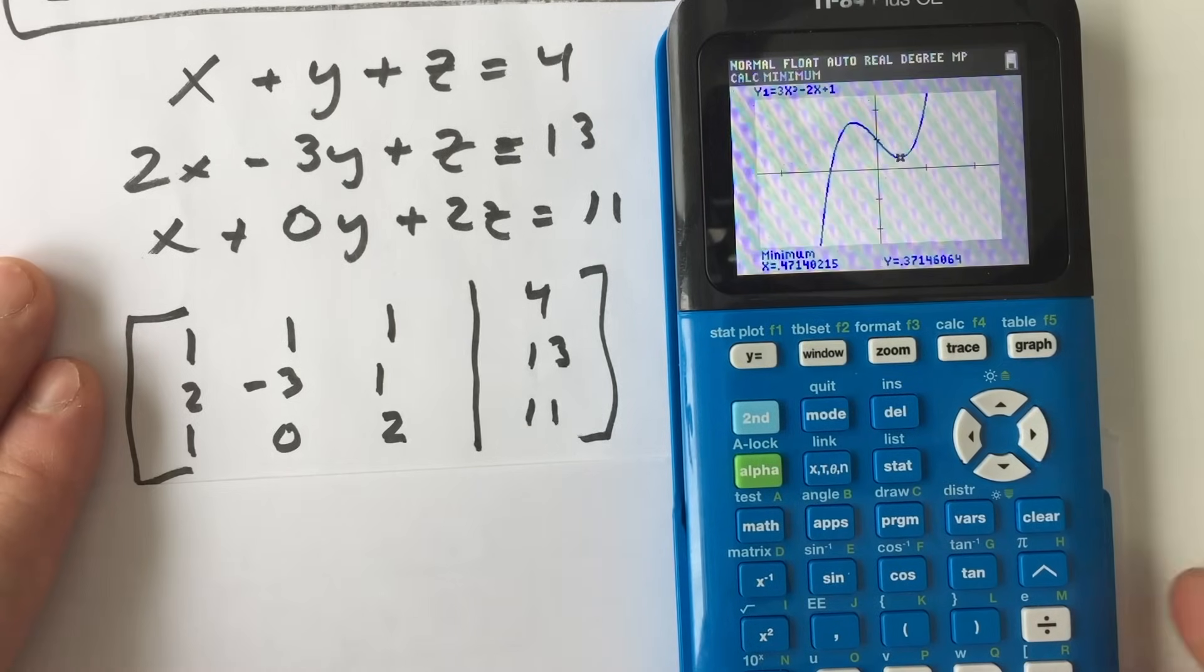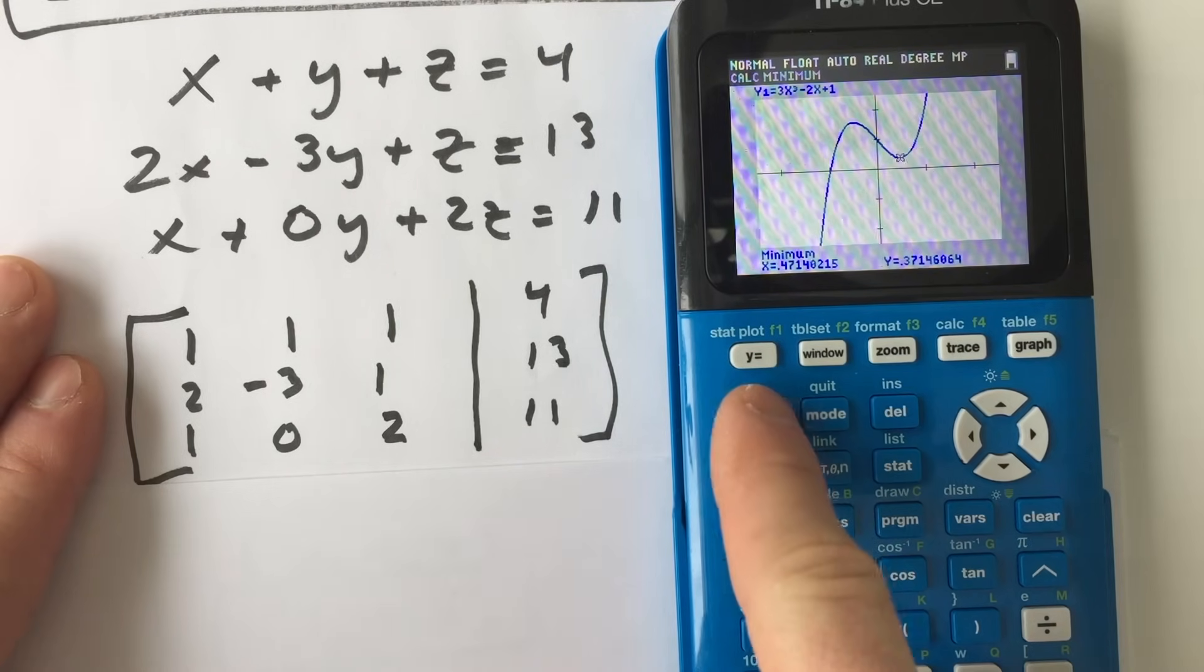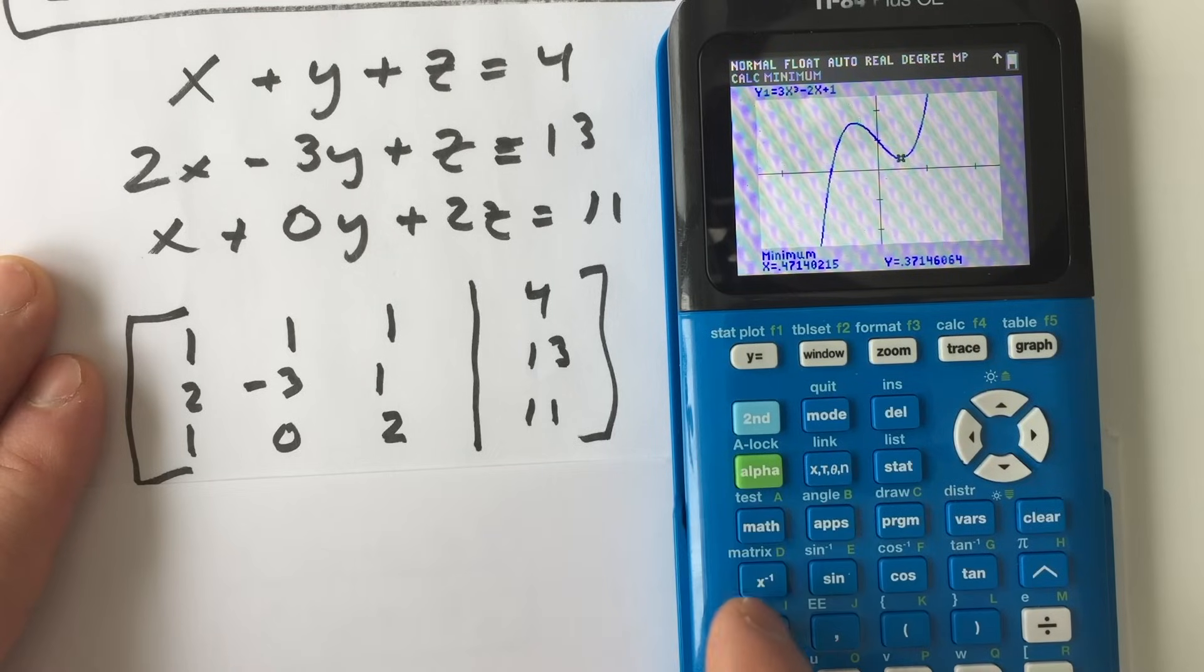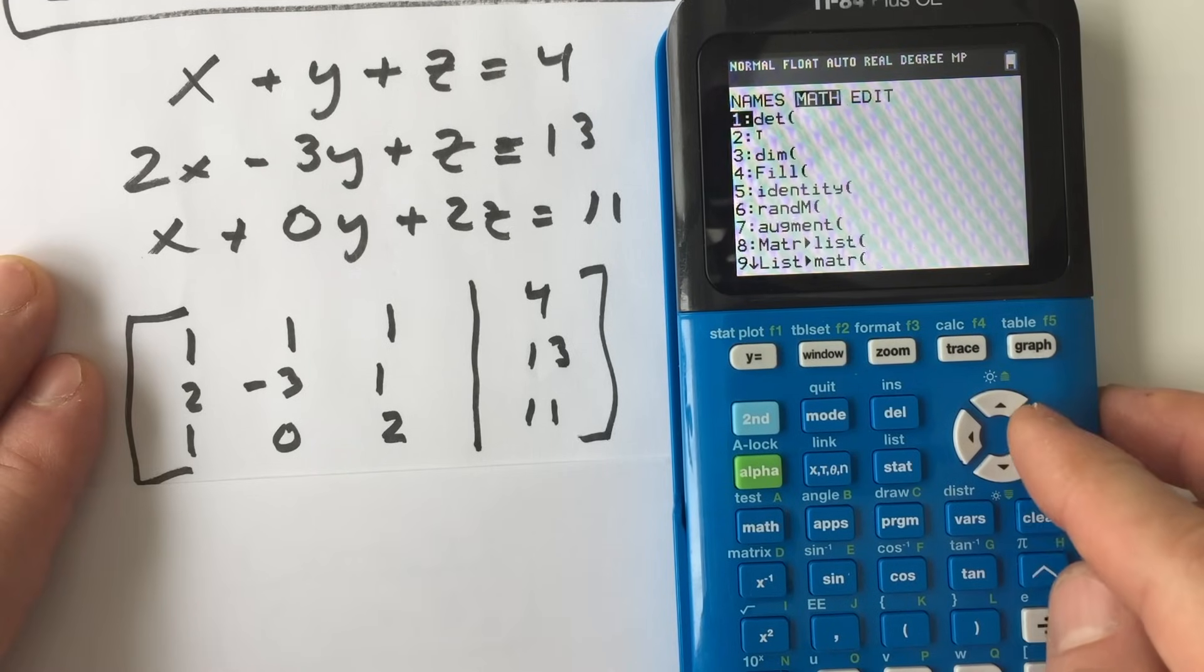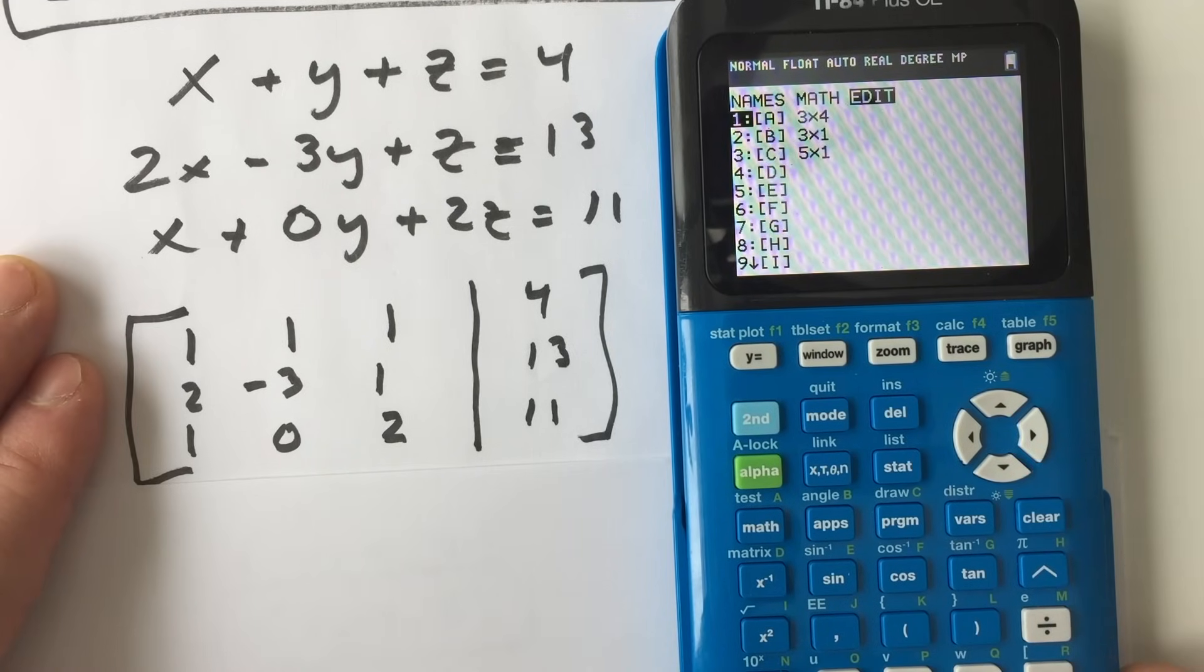And what you want to do is you want to go over to second, which is in the upper left-hand corner, matrix, which is above this x to the negative 1. And you want to select edit. So arrow to the right, edit, and press enter.